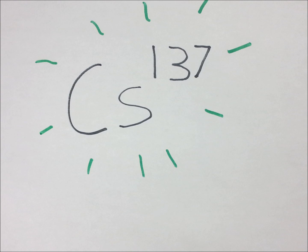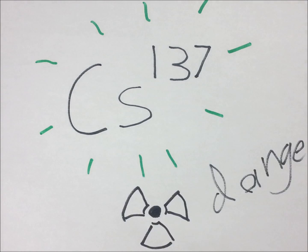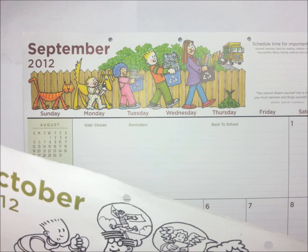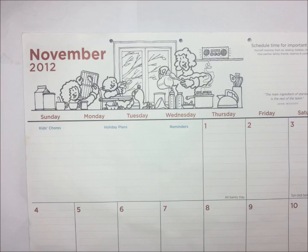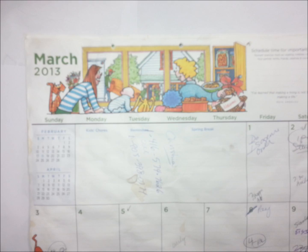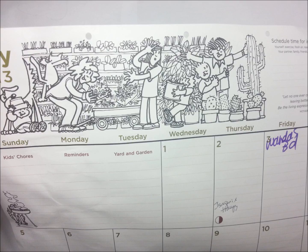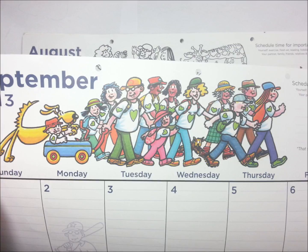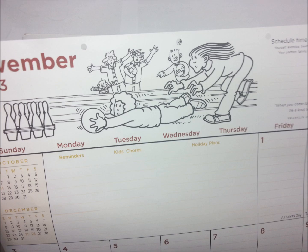Unlike cesium-137. Cesium-137 may be released from the core of a nuclear power plant. It has a half-life of over 30 years, meaning that more than half the cesium released into the environment during Chernobyl, even after 28 years, is still there today.